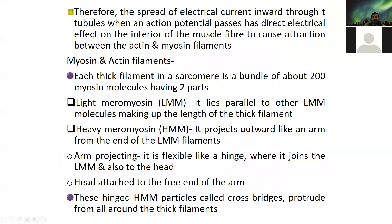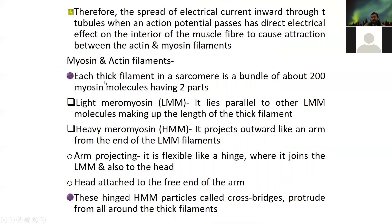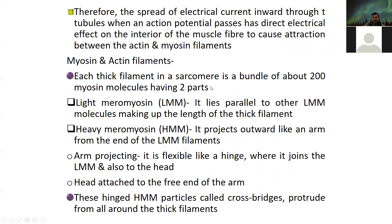The electrical current spreads inward through T-tubules when an action potential passes. This has a direct electrical effect on the interior of the muscle fiber, meaning the entire muscle fiber is affected. This is responsible for the attraction between the actin and myosin filaments — exactly, the myosin and actin filament interaction.